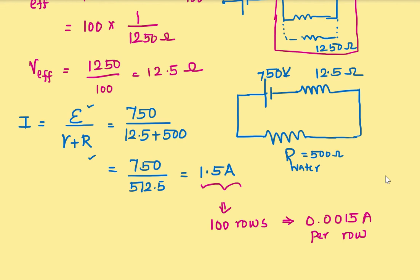So this is a very less current. And that's the reason the fish is not shocking itself. But it kills its prey. And that's it. Thank you.